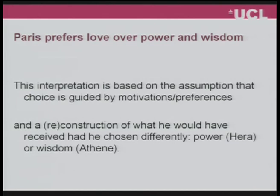This is the one thing that we have to do, and then we have to think about the other things that he might have had. We know that from Aphrodite he gets love. So what else would he have received had he chosen differently? On offer was power from Hera and wisdom from Athena. By reconstructing this choice set and thinking about what else he might have received, by making the assumption that his choice is an expression of his preferences, we can infer from his choice his preference — we can say Paris chose Aphrodite because he prefers love over power and wisdom.